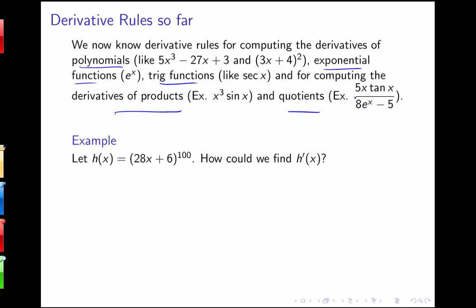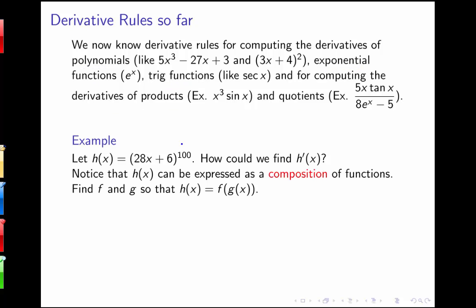So, what if we have something like h of x equals 28x plus 6 to the 100th power? How could we go about finding h prime of x with all of the rules that we have so far? Well, we could multiply this out times itself 100 times and turn it into a polynomial and then take the derivative, but that would be quite time-consuming. So the idea here is to notice that this function h can be expressed as a composition of functions.